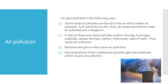Air gets polluted in the following ways. Some kinds of particles are found in the air which make air polluted. Such particles are dirt, dust, dry grass and leaves, which make the air polluted and unhygienic. In the air, there are chemicals like sulphur dioxide, hydrogen sulphide, carbon dioxide, carbon monoxide, and salts of iodine. They cause air pollution. Bacteria and germs also cause air pollution. Decomposition of bio-substances causes foul smell and spreads gases like methane, which causes air pollution.